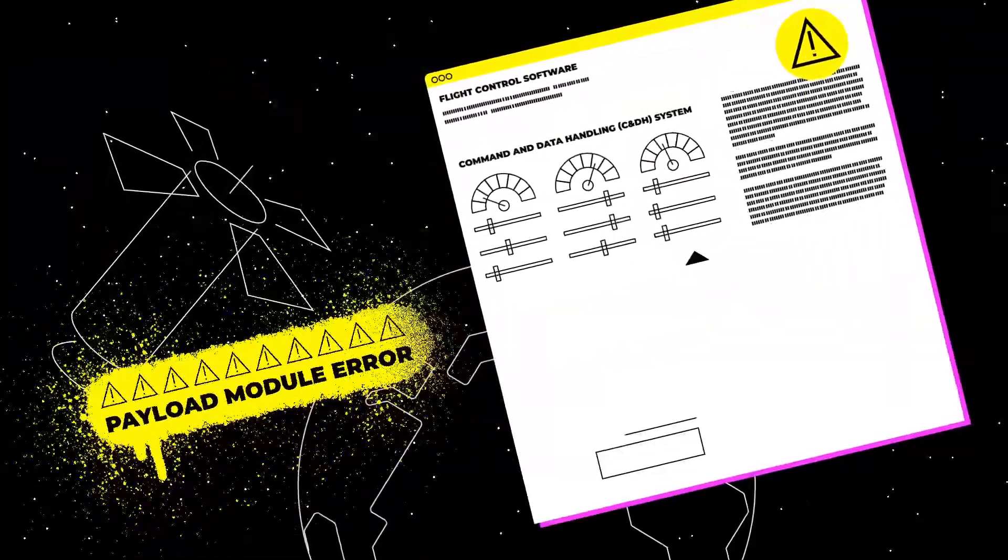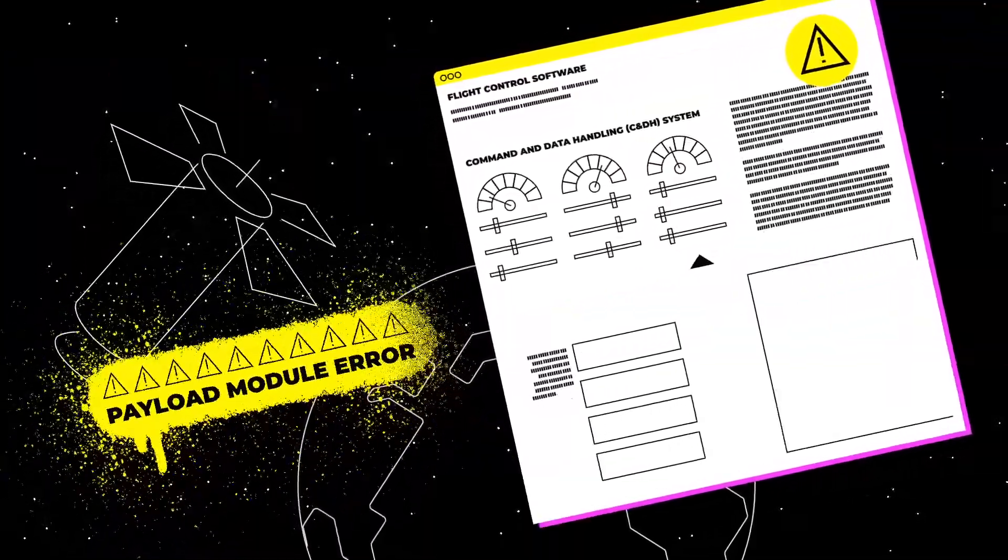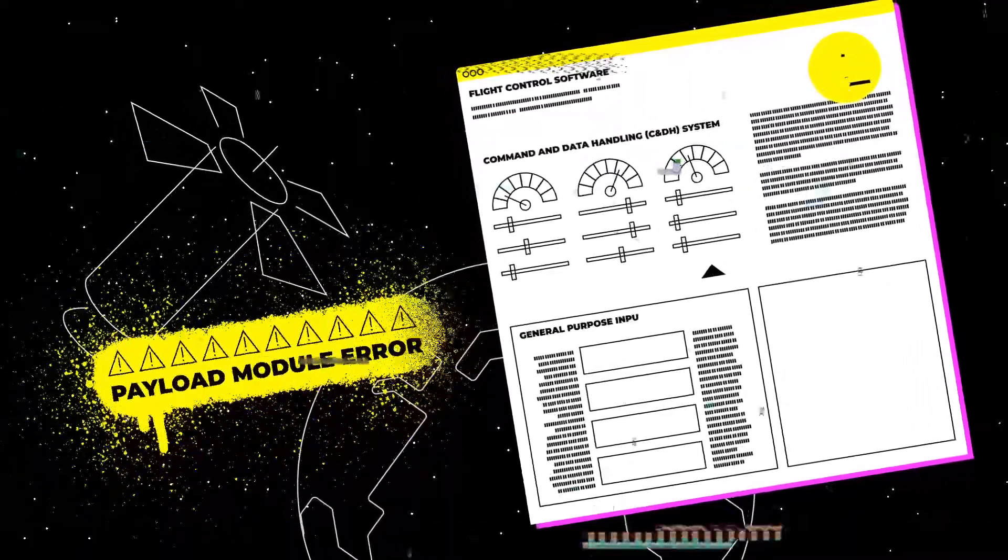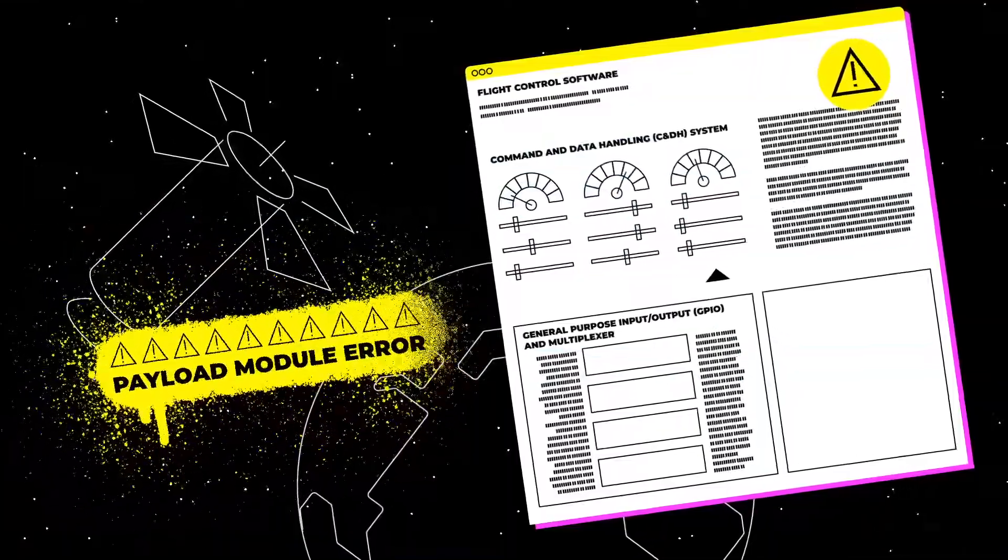The teams discover a system console to the payload module and the ability to access the payload module system console by controlling an undocumented GPIO and multiplexer on the C&DH board.